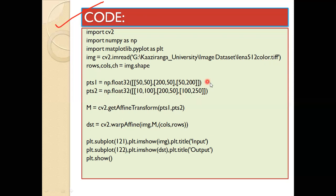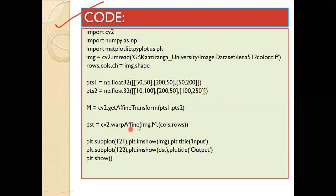You can try different point values and after executing the experiment, you'll see the difference in the output — let me know. So M = cv2.getAffineTransform(points1, points2) — that gives us the transformation matrix. Now we pass this to dst = cv2.warpAffine(image, M, (cols, rows)). That gives us the affine transformation output.